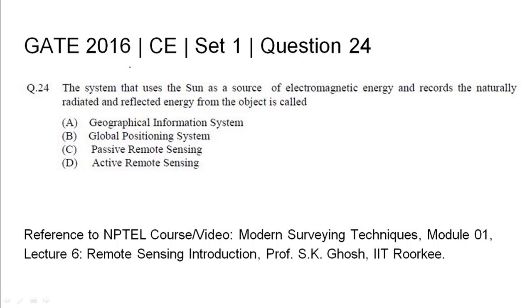GATE 2016 Civil Engineering Set 1, Question 24: The system that uses the sun as a source of electromagnetic energy and records the naturally radiated and reflected energy from the object is called? Four options are given: A) Geographical Information System, B) Global Positioning System, C) Passive Remote Sensing, and D) Active Remote Sensing.